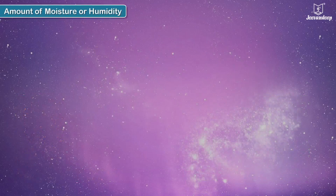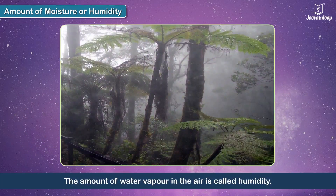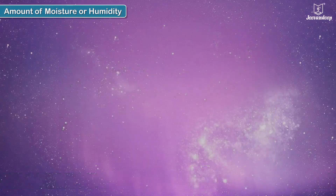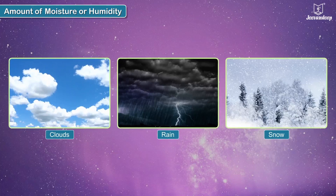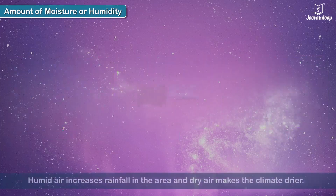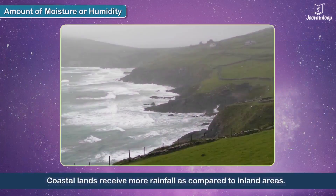Amount of moisture or humidity: the amount of water vapor in the air is called humidity. Humidity is responsible for the formation of clouds, rain, and snow. Humid air increases rainfall in an area, while dry air makes the climate drier. That is the reason why coastal lands receive more rainfall as compared to inland areas.